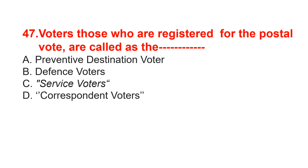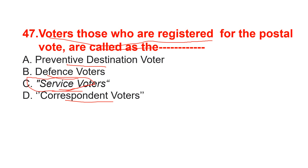Voters who are registered for the postal vote are called — options are preventive destination voter, defense voters, service voters, or correspondent voters. The correct option is service voters, option C.